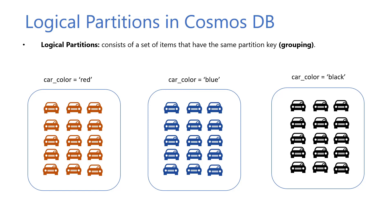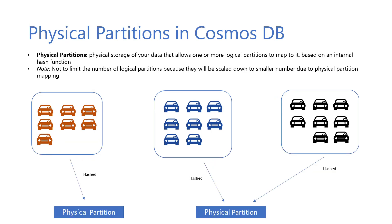Logical partitions consist of a set of items that have the same partition key. Physical partitions are the physical storage of your data that allows one or more logical partitions to map to it based on an internal hash function. It is important to note not to limit the number of logical partitions because they will be scaled down to a smaller number due to physical partition mapping.